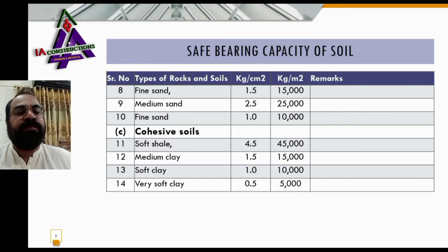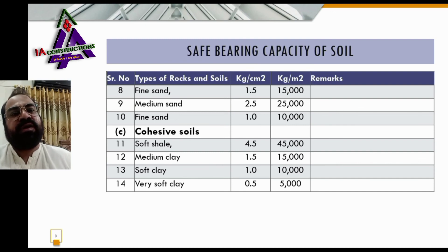Number fourteen: very soft clay — bearing capacity of very soft clay is 0.5 kg per centimeter square and 5,000 kg per meter square.